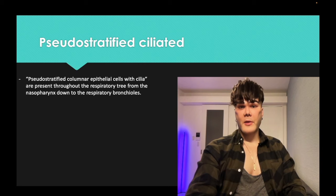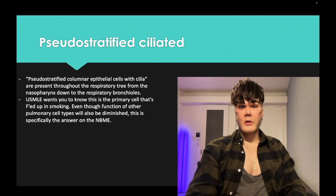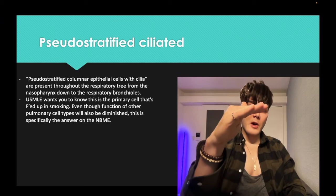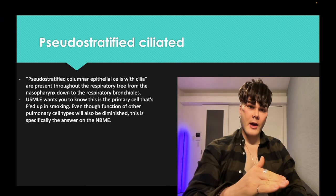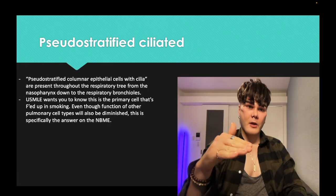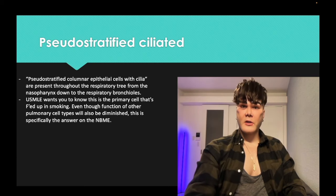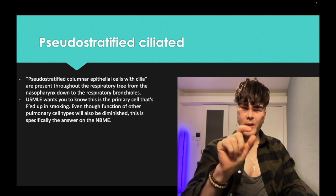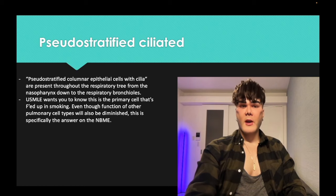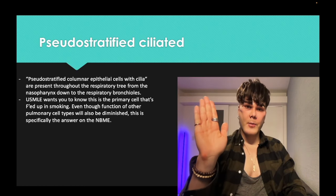Pseudostratified columnar epithelial cells with cilia line the respiratory tree down to the respiratory bronchioles. Respiratory bronchioles and alveoli are where gas exchange occurs. Terminal bronchioles and above have very limited or no gas exchange, and there are more ciliated cells going upward.